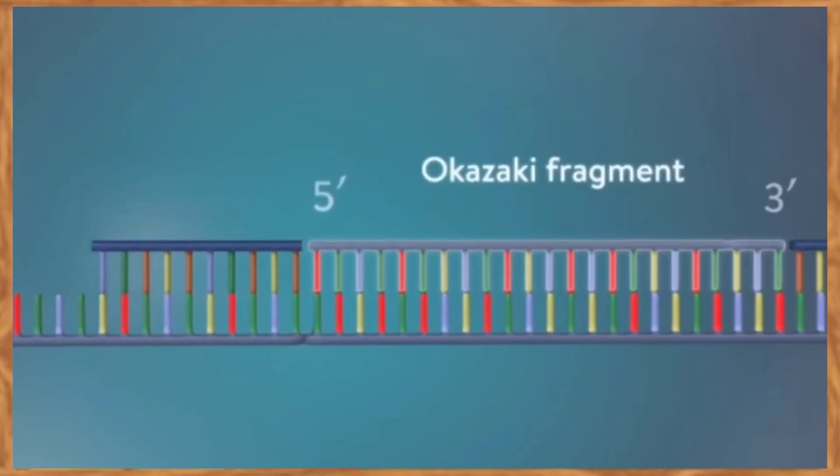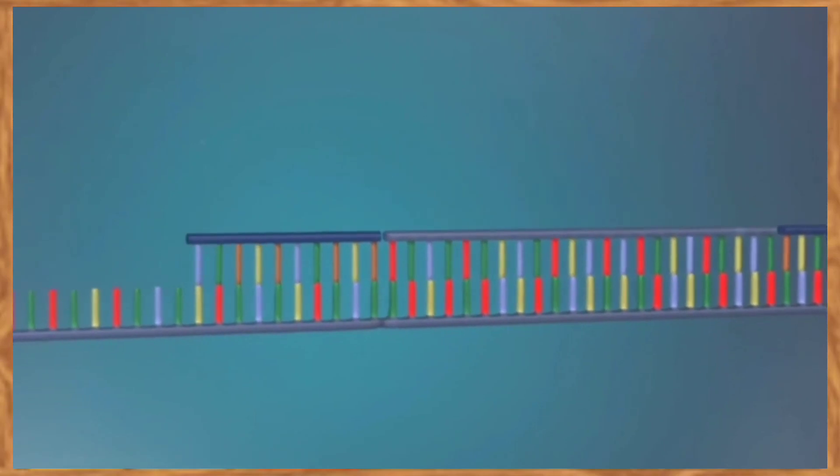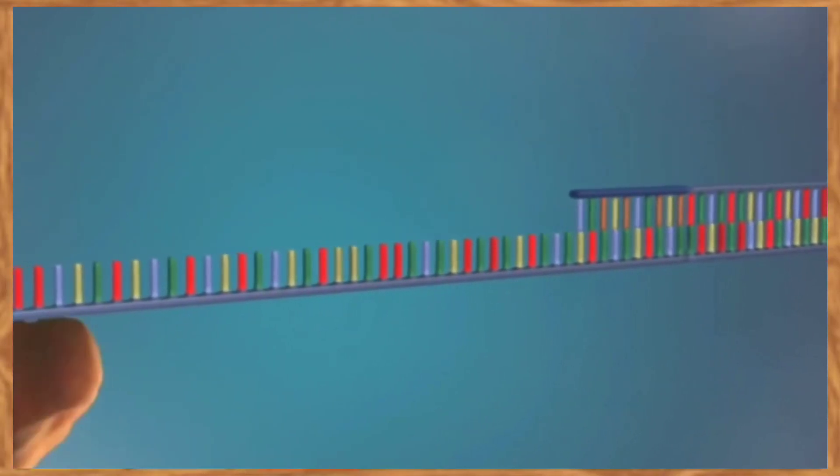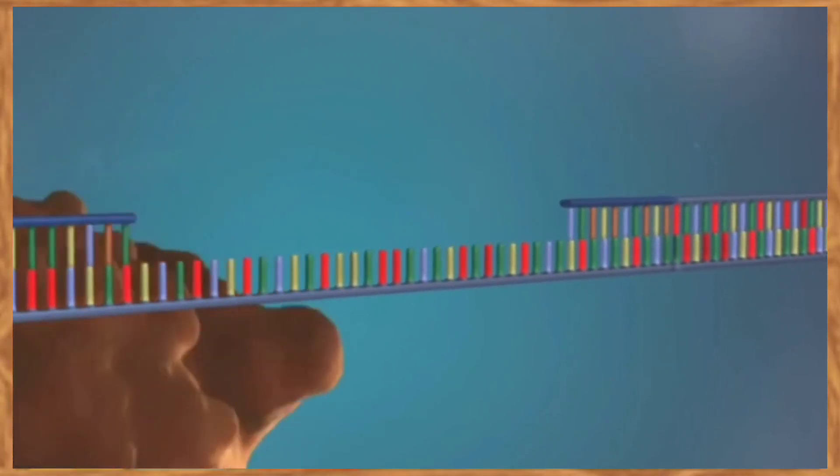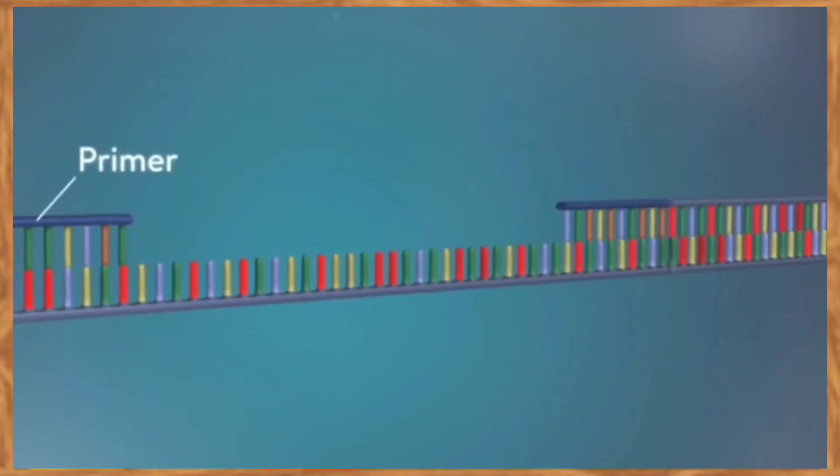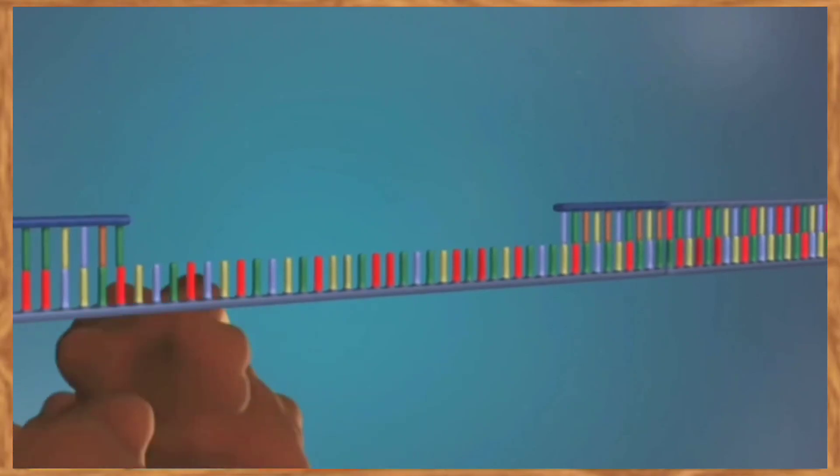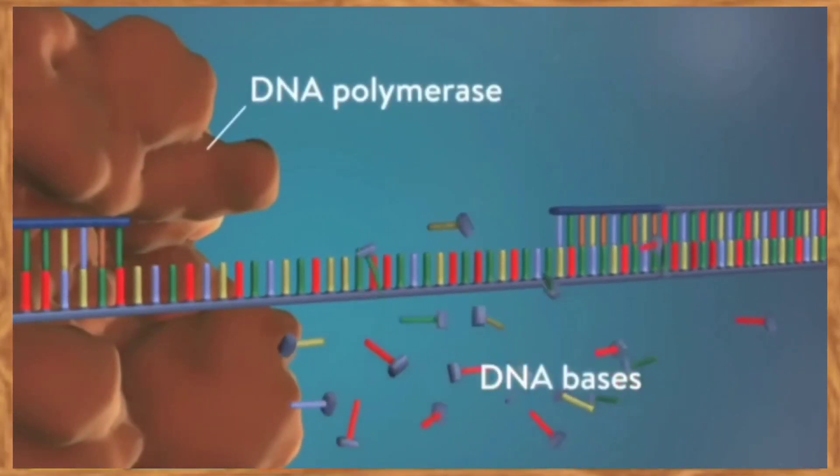DNA polymerase then adds short rows of DNA bases in the 5' to 3' direction. The next primer is then added farther down in the lagging strand. Another Okazaki fragment is then made and the process is repeated again.